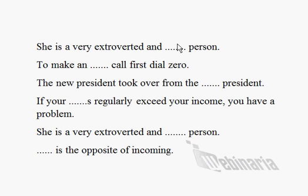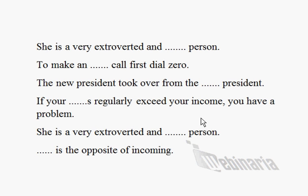Here they are all together. Remember we're only looking for one word and it's the same word in all the gaps. So here we go. I'm going to spell the answer when we've finished in case you've still got problems. She's a very extroverted and [missing word] person. To make a [missing word] call, first dial zero. The new president took over from the [missing word] president. If your [missing word]s regularly exceed your income, you have a problem. She is a very extroverted and [missing word] person. [Missing word] is the opposite of incoming.